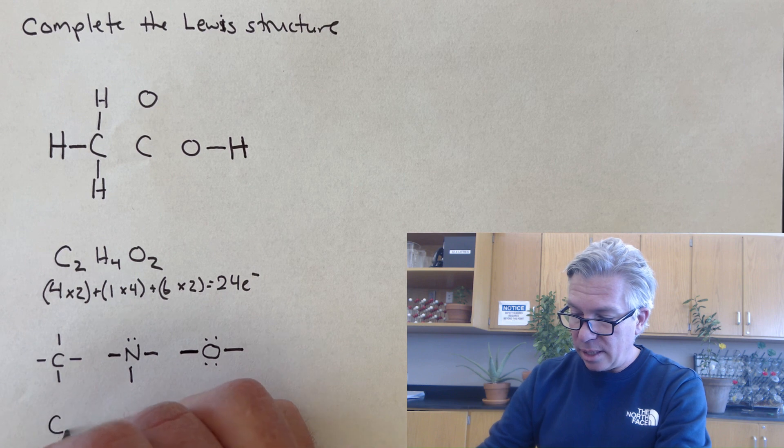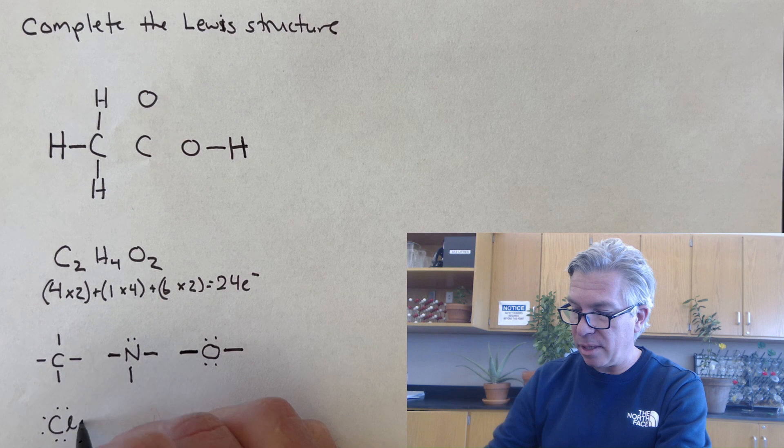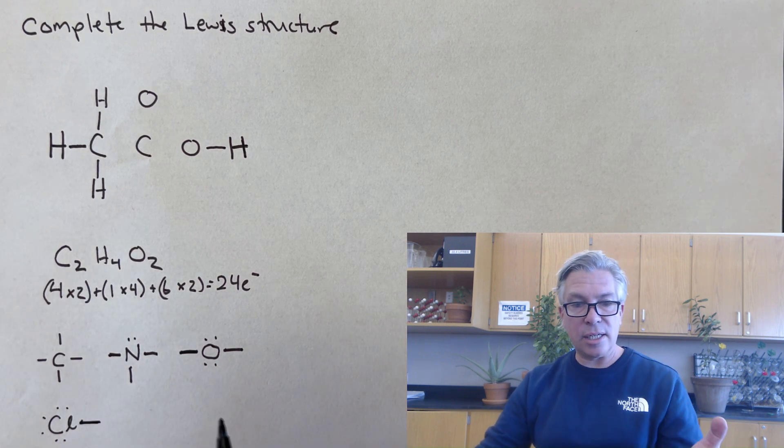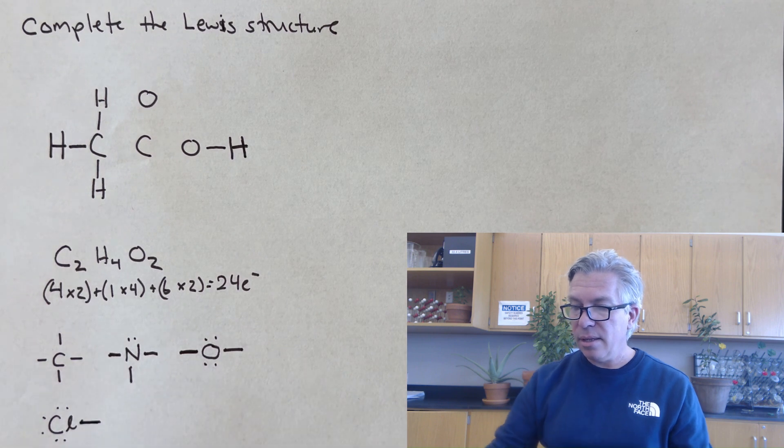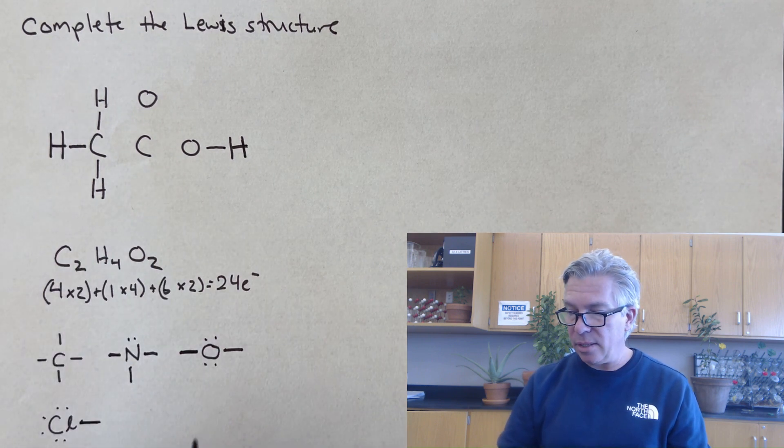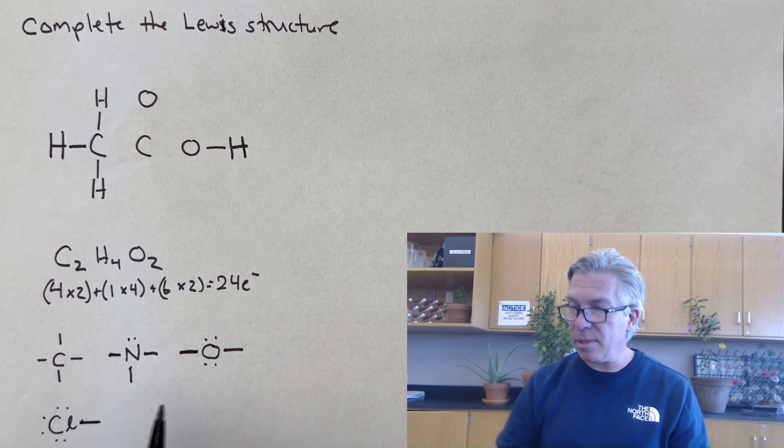Halogens like chlorine, fluorine, bromine, and iodine would have seven valence electrons to start. They'll typically make one bond unless they're the central atom, in which case all bets are off. And that's not the case here. This is a typical organic molecule. So I'm looking for something typically along these lines.